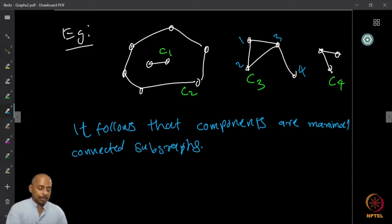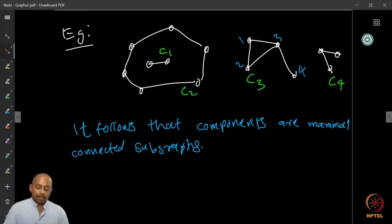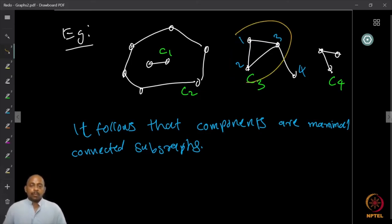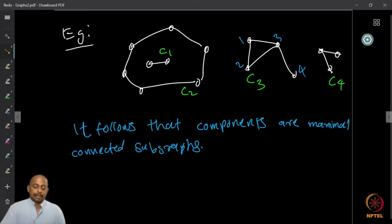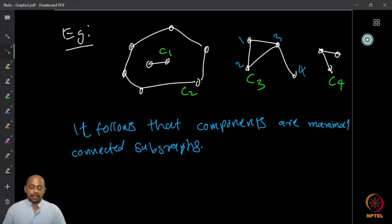What I want to emphasize is that, for example, vertices 1, 2, 3 here form a connected subgraph, but it is not a component because it is not maximal. Vertex 4 is also reachable from any of these, and any of these are reachable from 4. So all four vertices form a component, and any strict subset is not a component. Similarly, C1, C2, and C4 are each a component by themselves.